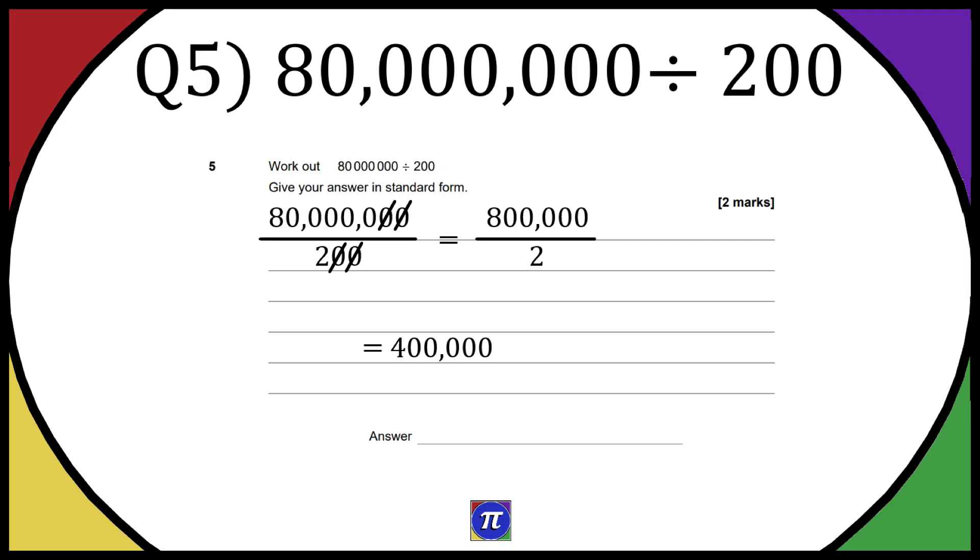If they want it in standard form, it's going to be equal to 4 times 10 to the power of 5, and that's because we've got five zeros. We've got 4 as the main number there, and it's just basically saying you're multiplying 4 by 10 five times, you're just adding five zeros.